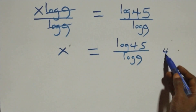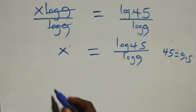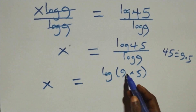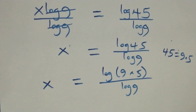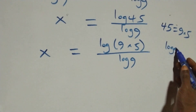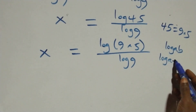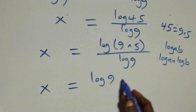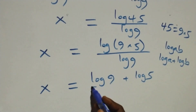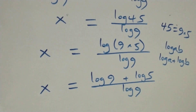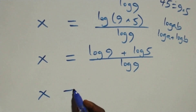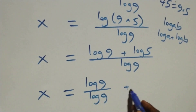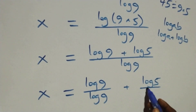What we have here becomes x equals to log (9 times 5) over log 9. This follows the log rule where log a times b is the same thing as log a plus log b. So all we have becomes x equals to log 9 plus log 5 over log 9, which gives us log 9 over log 9 plus log 5 over log 9.